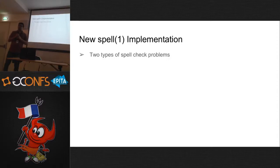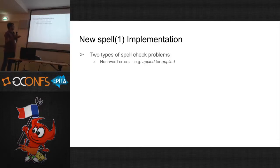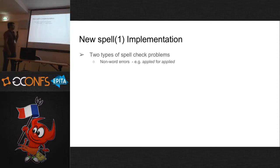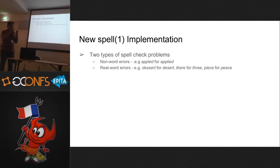When doing spell checking, there are two major kinds of errors. The first is a non-word error — for example, if you misspell 'applied' as 'applie' by dropping the 'd', it becomes a non-word, not in the dictionary. These are easy to detect. The second kind is a real-word error — for example, if you want to spell 'desert' but add an extra 's' and it becomes 'dessert', that's also a word. Or if you want to write 'there' but transpose R and E it becomes 'three', also a word. If you want to write 'piece' but use a different spelling, that is also a word. These are much harder to figure out.